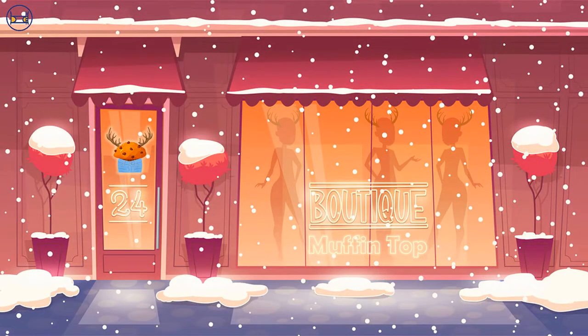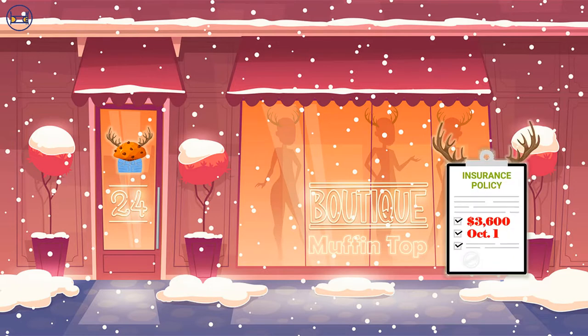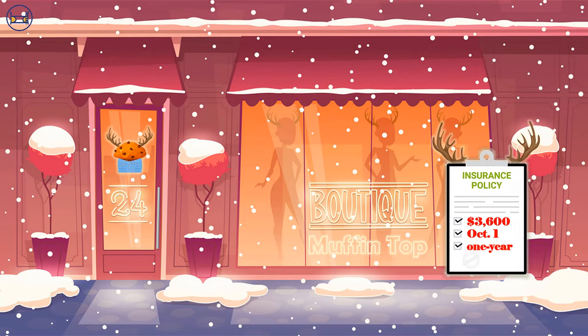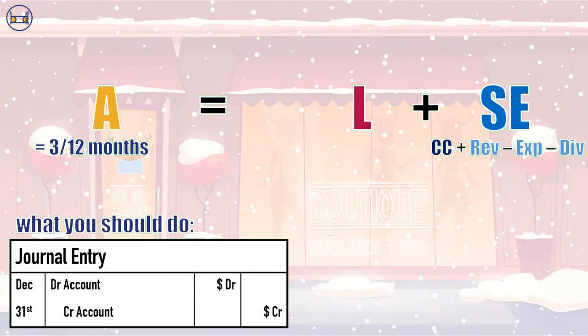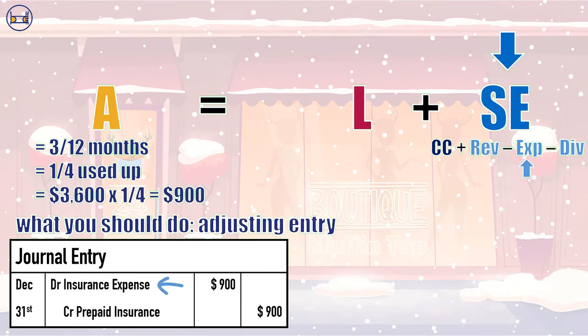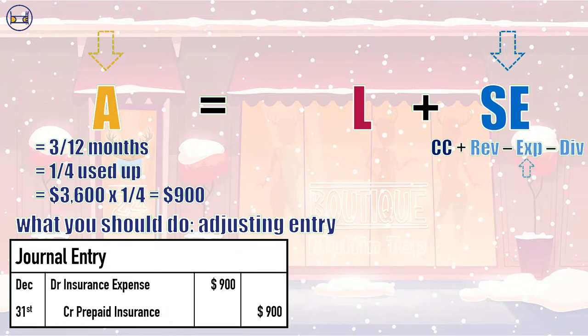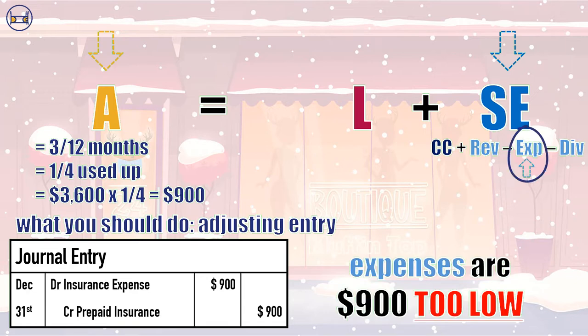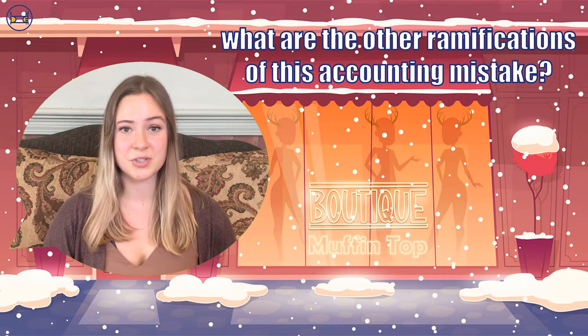Another way the company could understate its expenses is by forgetting to adjust its prepaid expenses. Perhaps three months ago, they bought a one-year antler insurance policy for $3,600. By three months in, they've used up one quarter of this policy, so they should make an adjustment debiting insurance expense and crediting prepaid insurance for $900. By failing to record these expenses, the company reports lower expenses than it really should. For more information on how to journalize prepaid expenses, you can check out our video linked in the description.